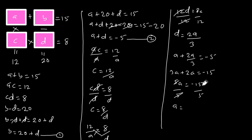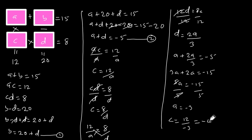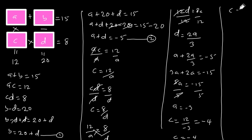Now that we have A equals negative 3, we can find C by plugging into C equals 12 over A. So C equals 12 over negative 3, which is negative 4. We can also find D using C equals 8 over D, substituting C equals negative 4.